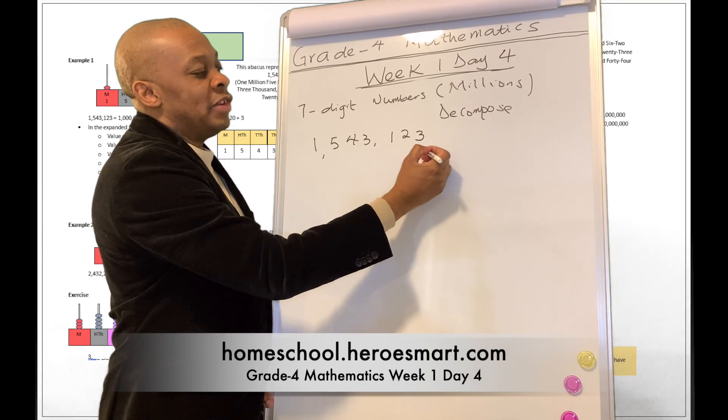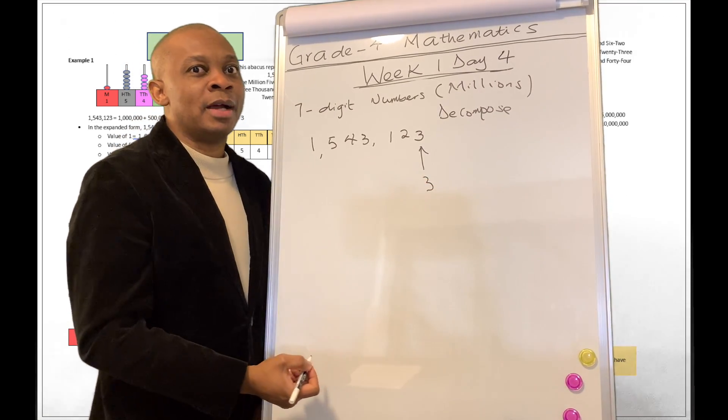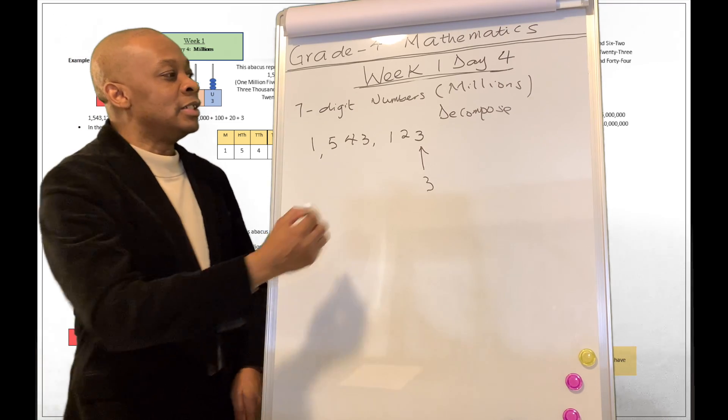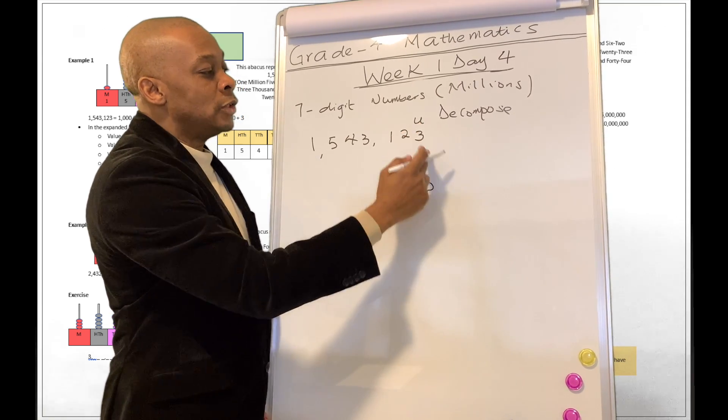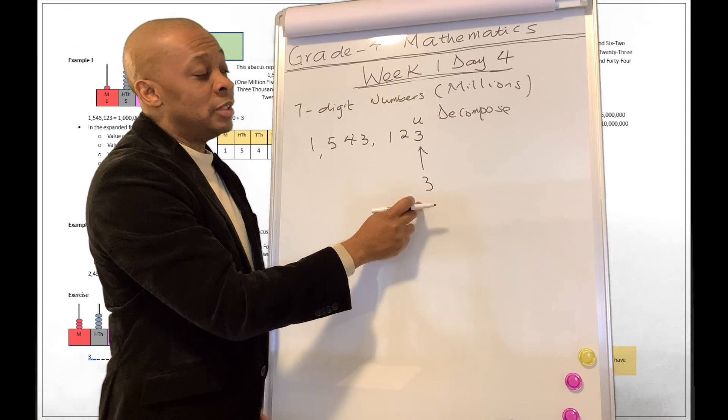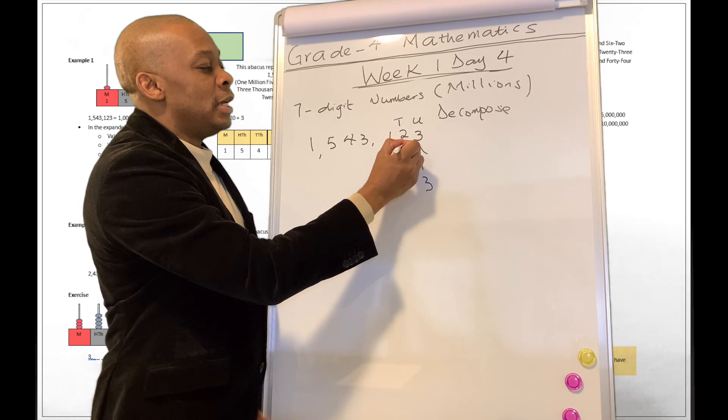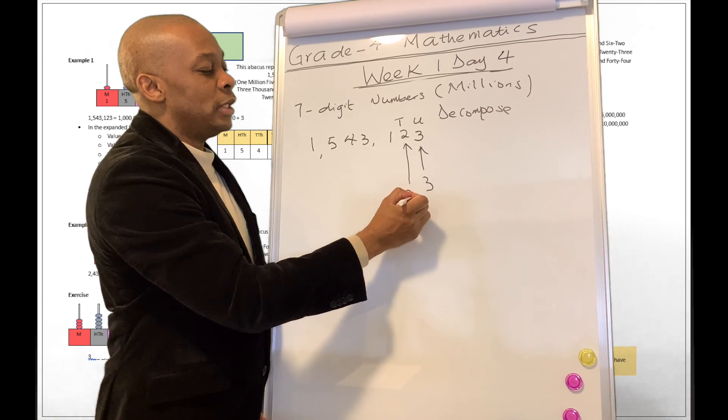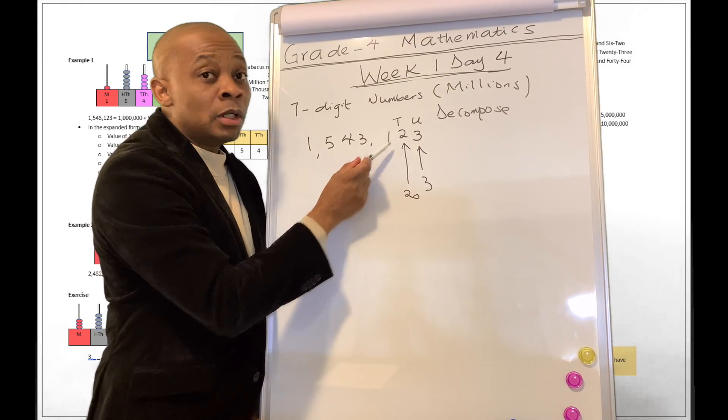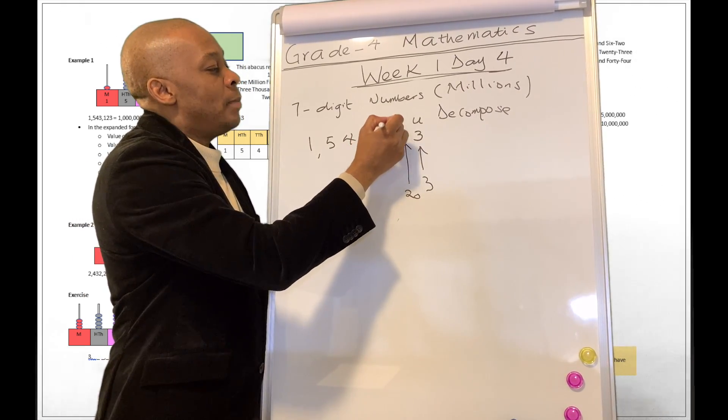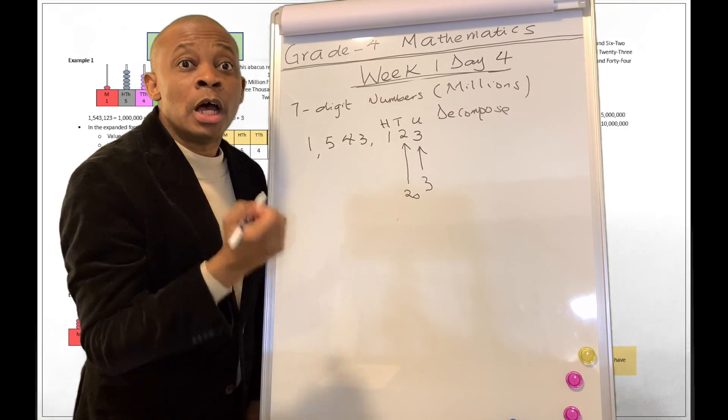So what is the value of 3? That's going to be 3 units, because we are going to be counting by units. We're going to be counting by 1s. So we are in the 1s column right now. So 3 is going to represent 3 units. What about 2 over here? Well, the 2 is in the 10s column and it is going to represent 20. So the value of digit 2 in this number is 20.